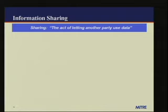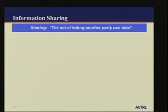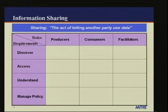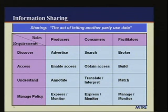Moving into what I mean by information sharing: sharing is the act of letting another party use data. This has several implications. First, there's some data — a set of objects you want to share. There's a set of sharing participants who play different roles. And there's a set of different requirements. Participants play roles of producers, consumers, and facilitators. Requirements include: consumers need to discover information, producers need to discover consumers, they need to access each other, the consumer needs to understand the data in order to use it, and finally there's policy that cross-cuts all these areas.